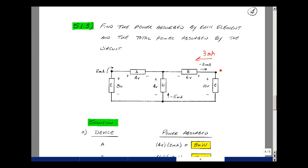For device C, we have current entering the plus terminal, so it would be minus 3 milliamps times 10 volts, absorbing minus 30 milliwatts.